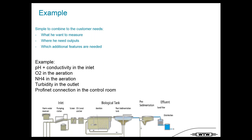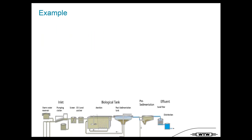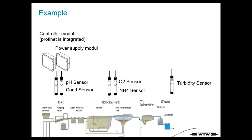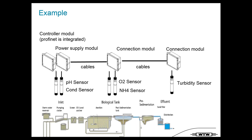It's simple to realize: select the sensors — pH conductivity at inlet, DO and ammonium at aeration, turbidity at the outlet. Then you need a power supply, a controller module with Profinet integrated, modules to connect the system, cables in between, and finally a movable terminal. That's it.